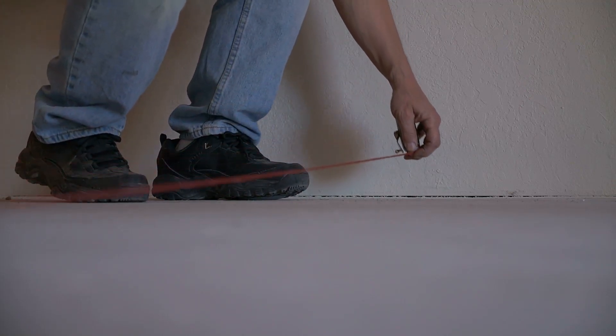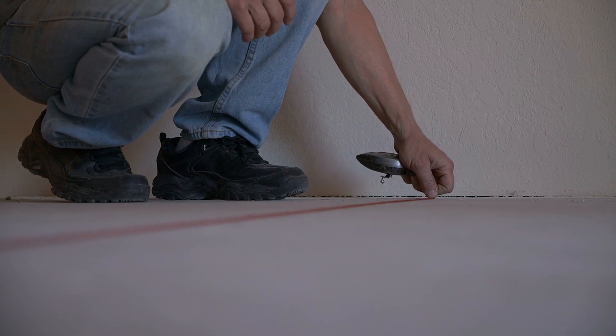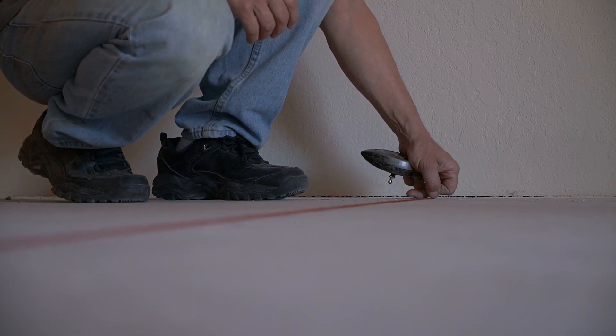Chalk lines are used to mark straight lines over long distances using a line or string that is filled with ground up chalk. The process sounds simple, but problems do arise.